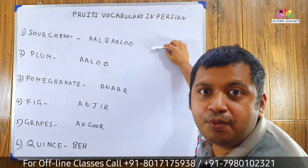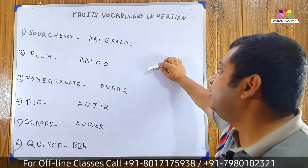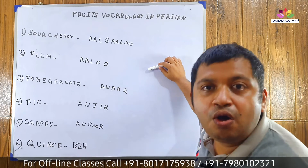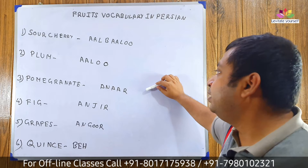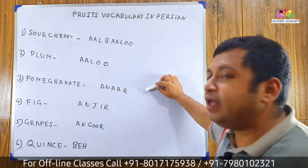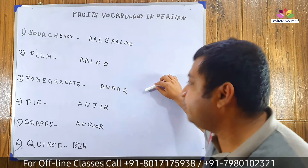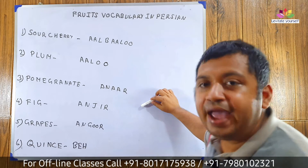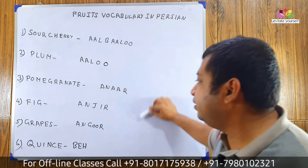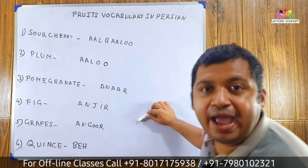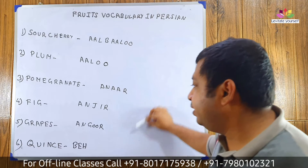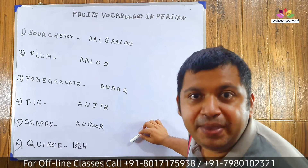Sour cherry: Albaloo. Plum: Aloo. Pomegranate: Anar. Fig: Anjir. Grapes: Angoor. Quince: Beh.